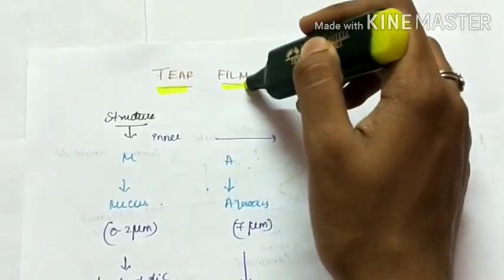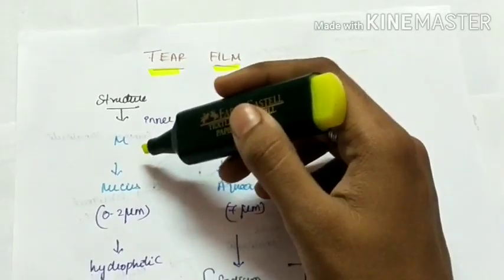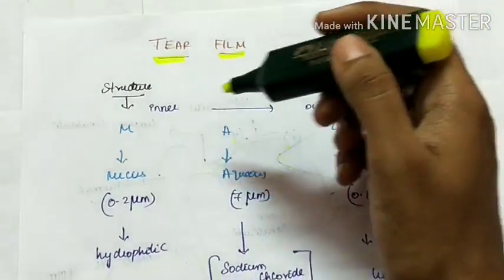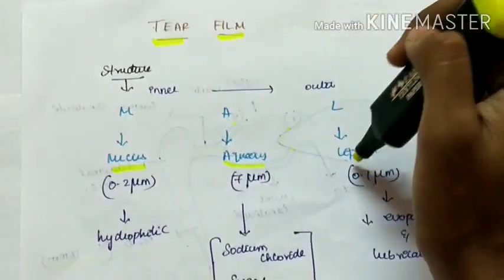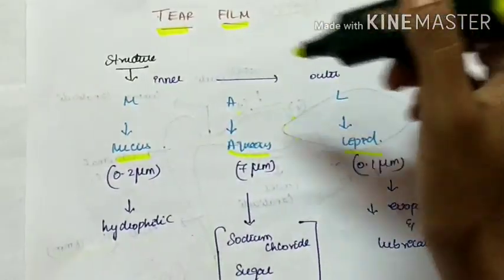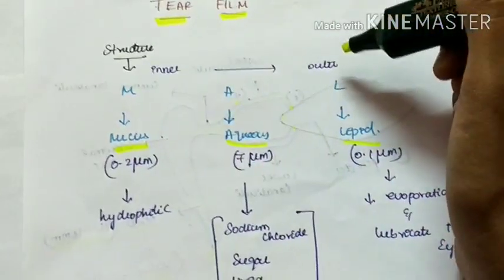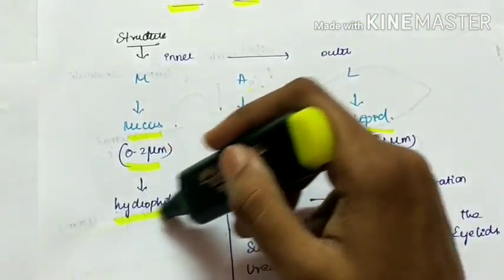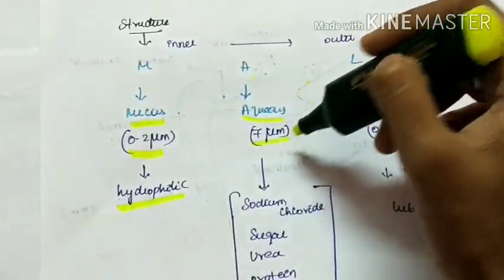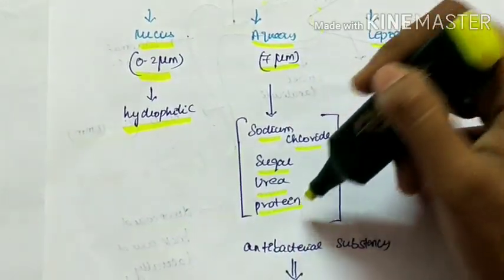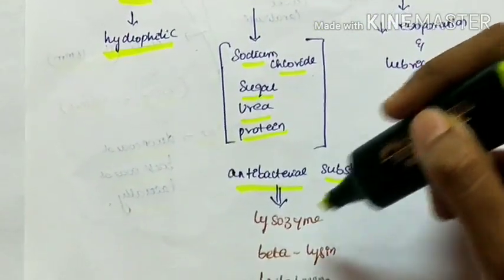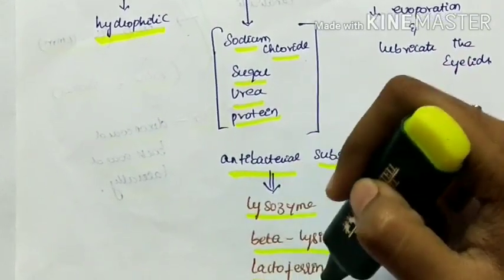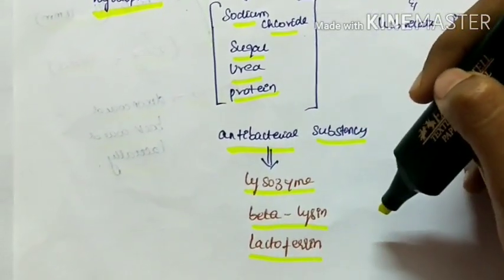The tear film is made up of three layers from inside to outside: the mucus layer, aqueous layer, and lipid layer — MAL. The mucus layer is 0 to 2 micrometers thick and is a hydrophilic layer. The aqueous layer is 7 micrometers in thickness and contains sodium chloride, sugar, urea, and protein. It also has antibacterial substances such as lysozyme, beta-lysine, and lactoferrin, which give tears their antibacterial nature.